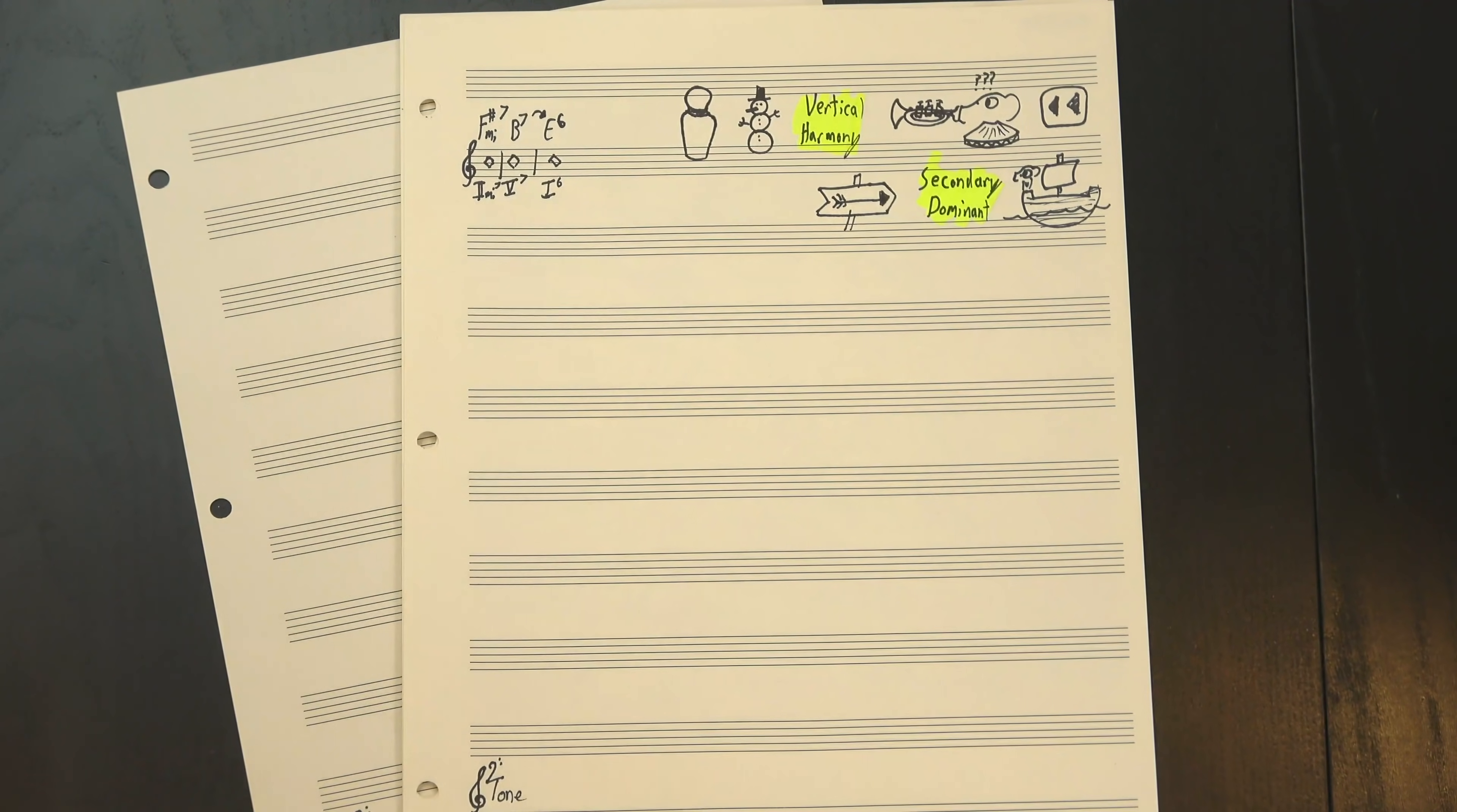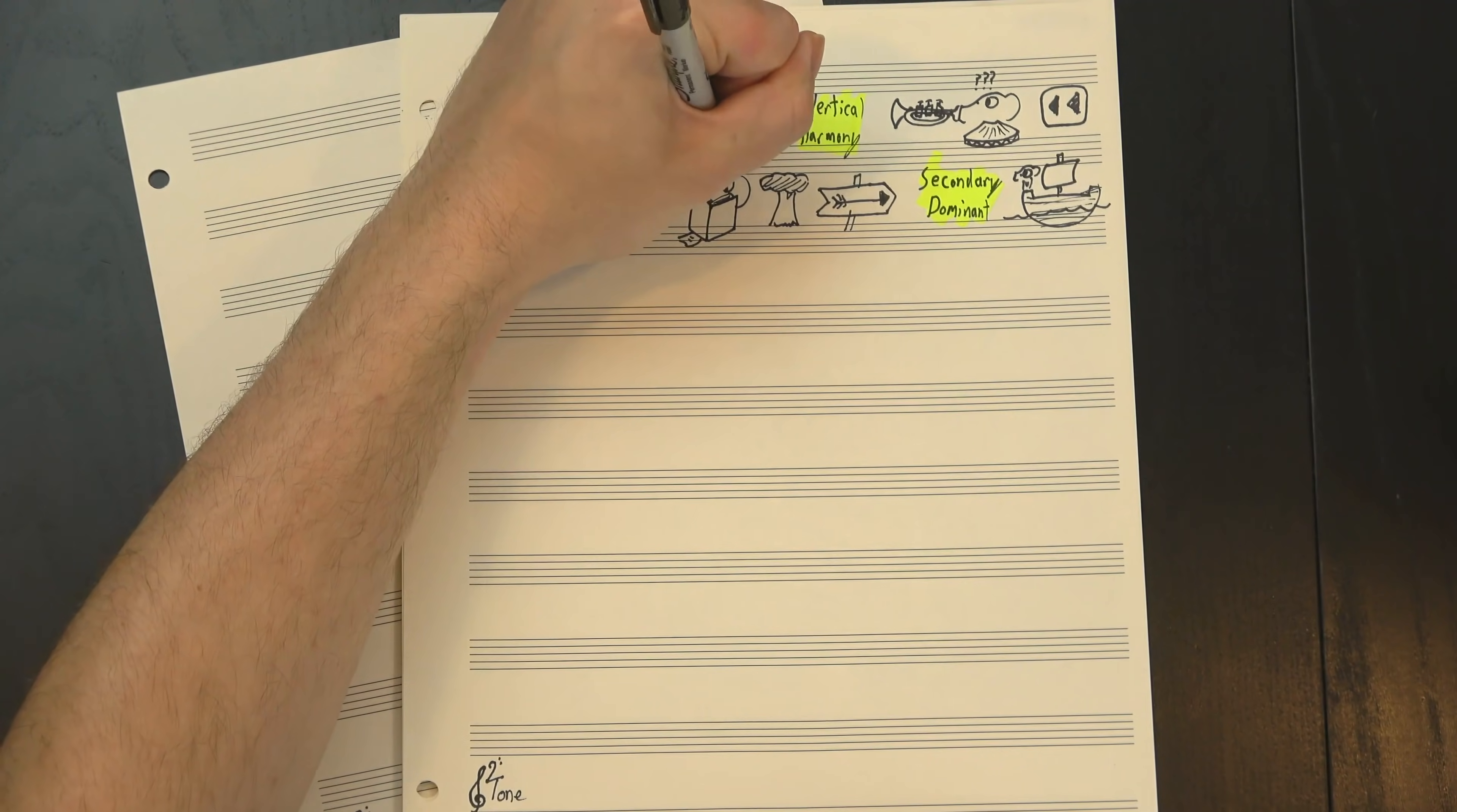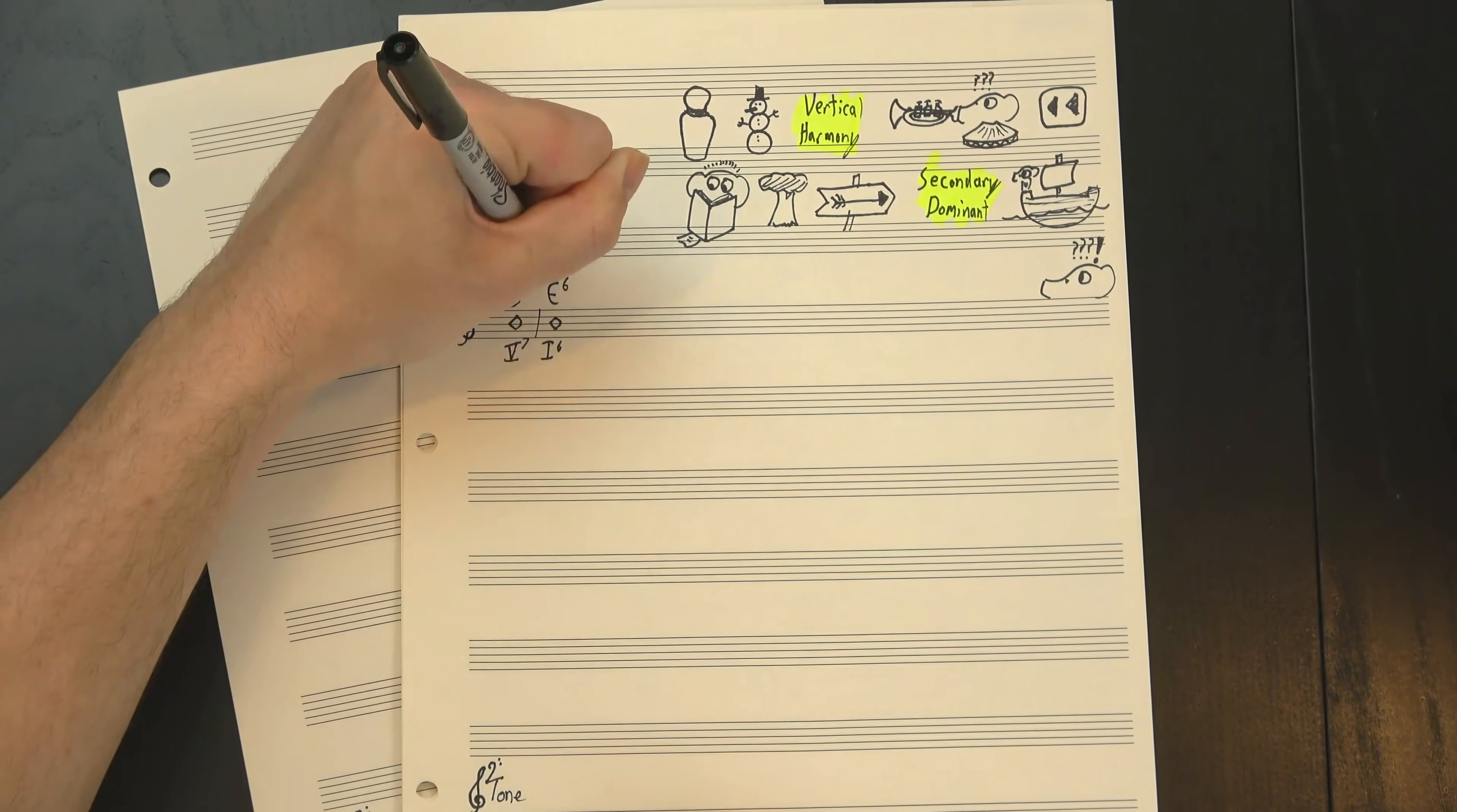This is, in effect, a strongly directional chord that points us somewhere other than the root, and the easiest way to find one is just to look at the scale your target chord is based on and borrow its V. That sounds a bit more confusing than it is, so let's try an example. We're in E major, so our V chord is B7, which points us back to E.